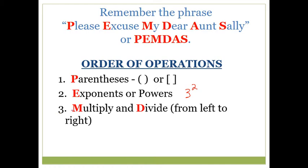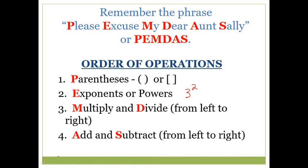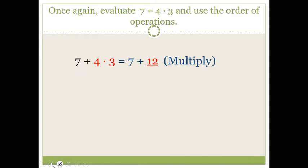Next we do multiplication and division from left to right. Multiply and divide have the same priority in the order — you just do them from left to right when you see them in an expression. And then finally we do addition and subtraction from left to right. Add and subtract also have the same priority when evaluating an expression. So basically it's just these four steps: parentheses first, then exponents, then multiply and divide from left to right, and finally add and subtract from left to right. We remember this with 'Please Excuse My Dear Aunt Sally.'